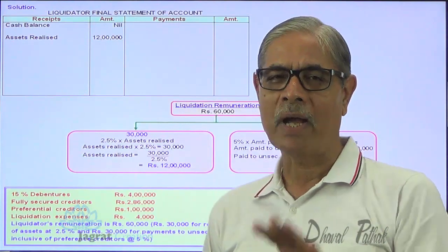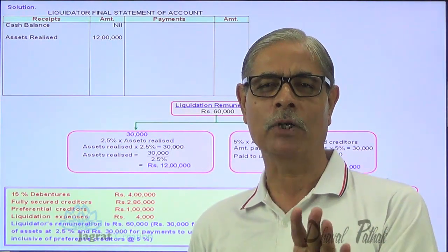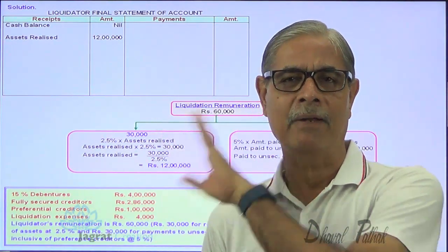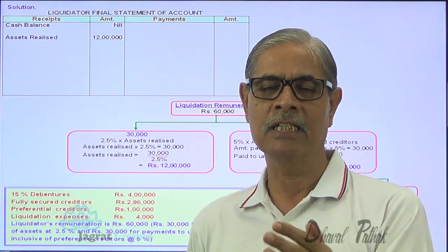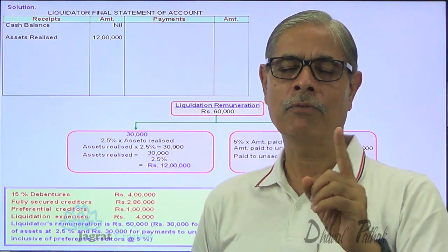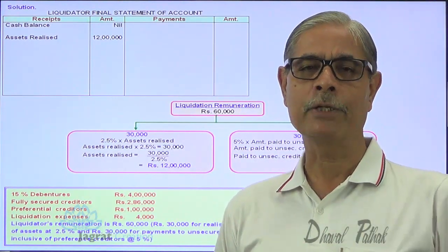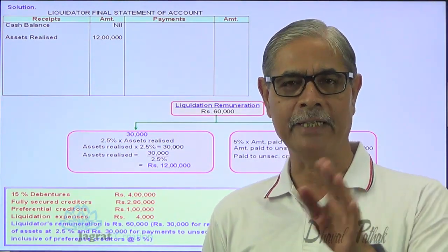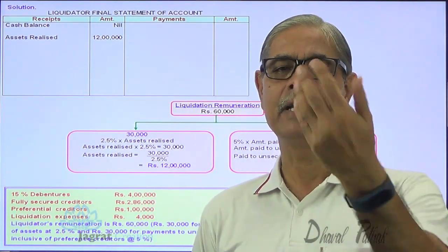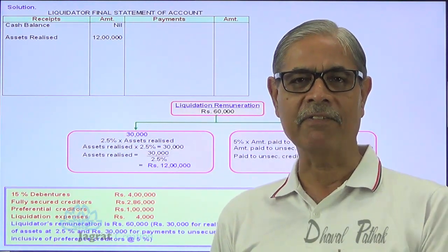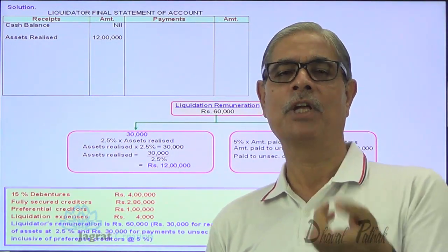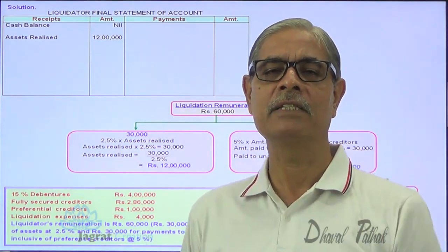So 12,00,000 minus the secured payments — I don't have sufficient funds to pay unsecured creditors after giving priority to fully secured creditors, debenture holders and preferential payments. The deficit shortage for payment of unsecured creditors will be met by demanding the last call from the equity shareholders. The cash received from the last call will then be applied for payment of unsecured creditors.